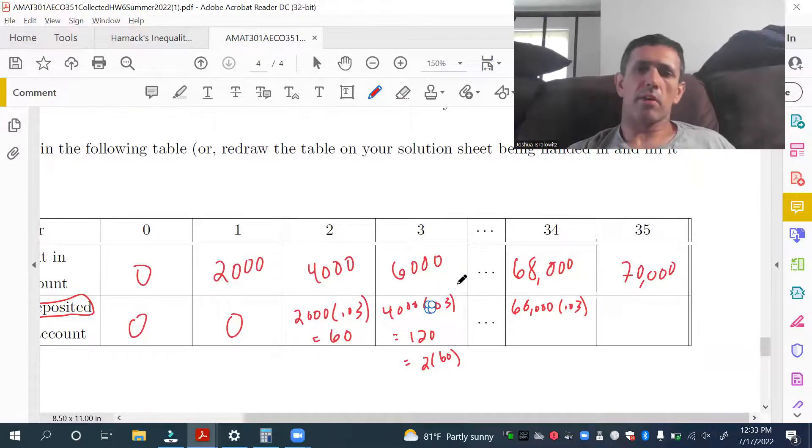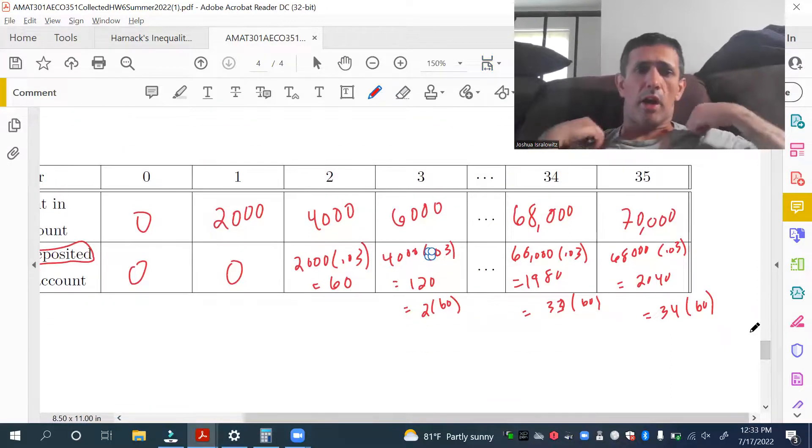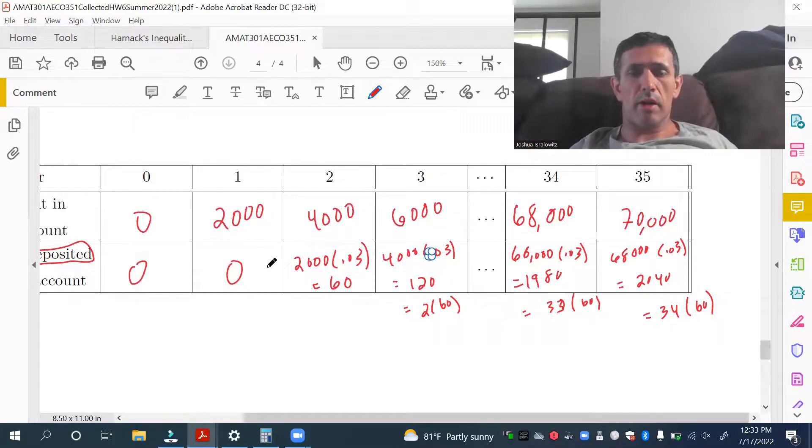So, it's $4,000 times 0.03. It is going to be $120. Obviously, that is 2 times 60. So, take the prior year, $66,000. Times 0.03. Again, the prior amount earns 3% interest. So, at the end of, you know, 34th year, you have $66,000 times 0.03. That is $19,80. You can check. That is going to be 33 times 60. And then, $68,000 earns one year of interest at 3%. $20,40, which is $34,60. So, we have a 34-year increasing annuity, immediate. Pay, you know, these deposits are at the end of each year.